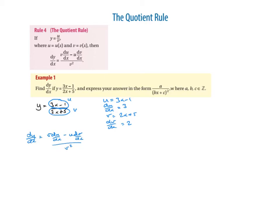That's in your tables book — you don't have to learn it. Like before, we're just going to stick in the values. v is 2x plus 5, so we put that in a bracket. du/dx is equal to 3, and I'll put it in front to make multiplying out easier. Minus u, which is 3x minus 1 in a bracket, multiplied by dv/dx, which is 2 — I'll put that at the beginning of the bracket.